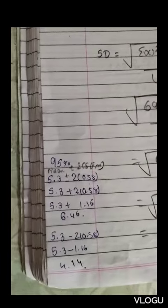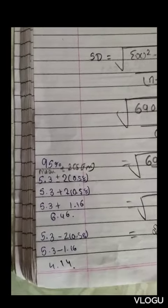For the third question, we have to find the 95% confidence interval. The formula is mean plus or minus 2 times the standard error. Our mean is 5.3—we have to do both plus and minus to find the range.